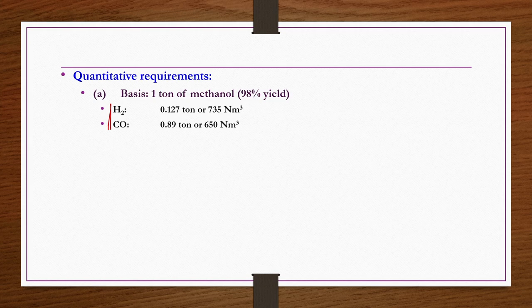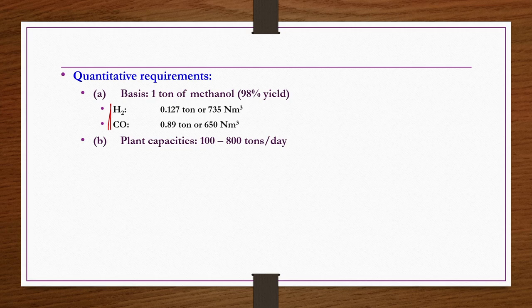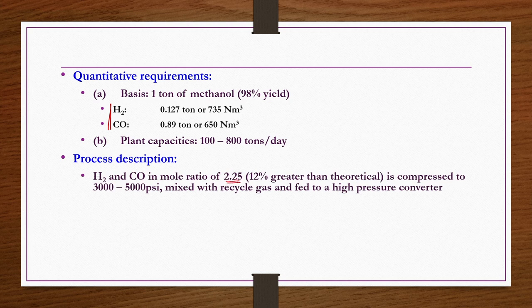Quantitative requirements: to produce 1 ton of methanol at 98% yield, 0.127 tons (735 normal cubic meters) of H2 and 0.89 tons (650 normal cubic meters) of CO are required. Plant capacity is usually 100 to 800 tons per day. H2 and CO are taken in a mole ratio of 2.25, which is 12 percent greater than the theoretical 2:1 ratio, because excess hydrogen is required to suppress side reactions.